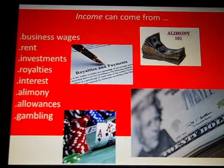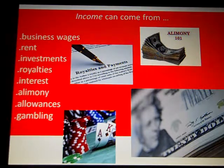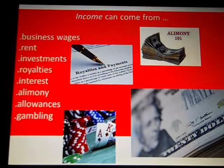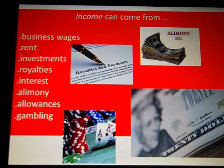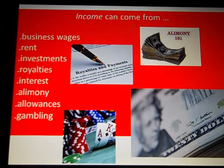Income can range from business wages — any money that you earn on the job — rents, investments, any kind of money that you get from investments, royalties. If you're a musician or athlete, any advertisements they do or music that's played on a commercial, they get a royalty every time it's aired. Also interest, alimony, allowances — if you've had an allowance as a child, that counts as income — and gambling. Technically, we're supposed to report gambling earnings as income.